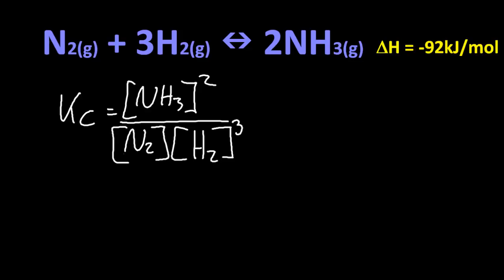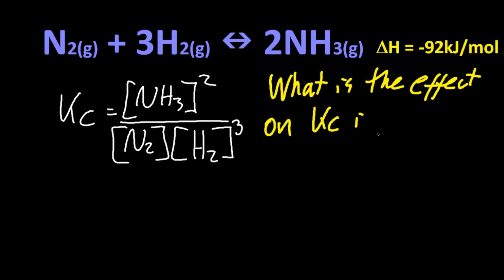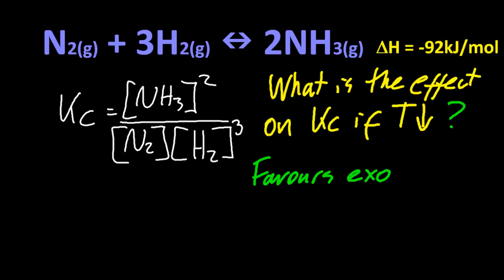Okay, so here's a question that isn't a trick. What's the effect on Kc if the temperature goes down? Well, it's going to favor the exo. I'm cooling it down. It wants to heat itself up. The products are exothermic. So Kc is going to increase in that case. We're going to make more ammonia in the equilibrium mixture.